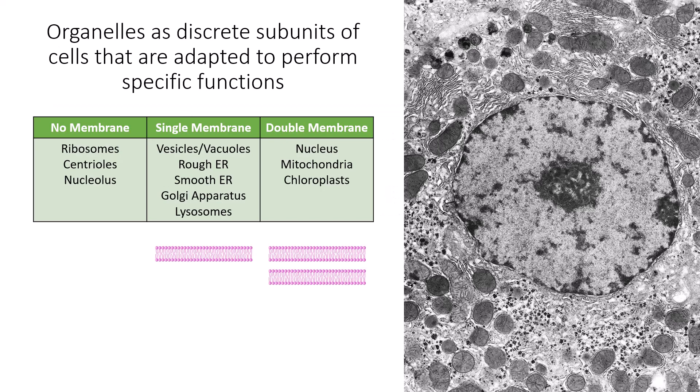The first thing we need to do when talking about this understanding is identify what are organelles and what aren't organelles. Even within the class of structures that are considered organelles, we need to talk about which have no membranes, which have one membrane, and which have two membranes. Our definition of organelles is a structure that is a discrete subunit within a cell, adapted to perform a specific function. Cells need to become compartmentalized because they have specific functions that need to be maintained all the time.